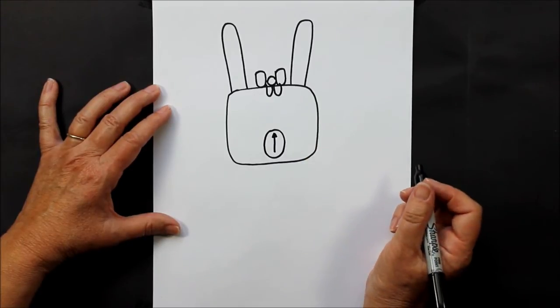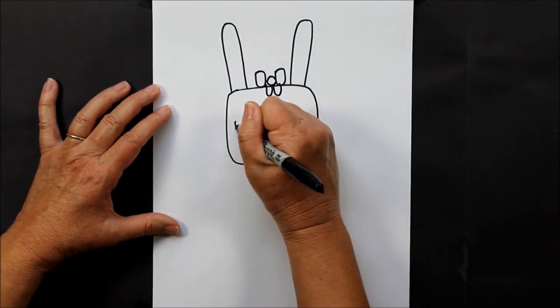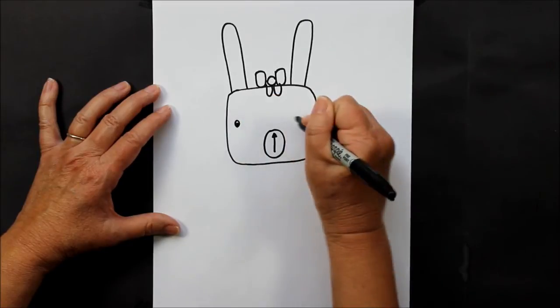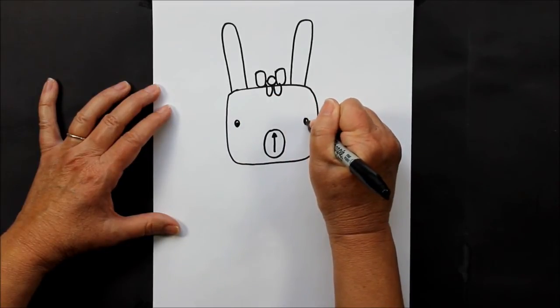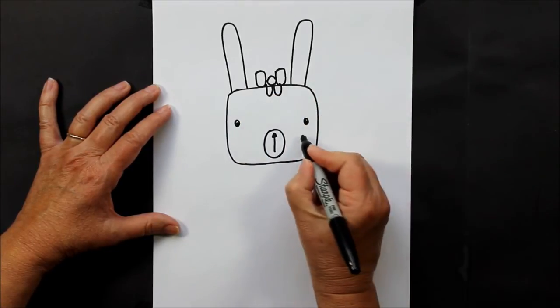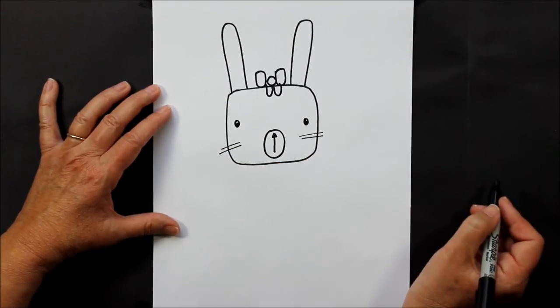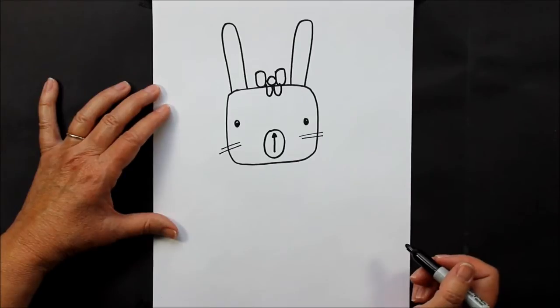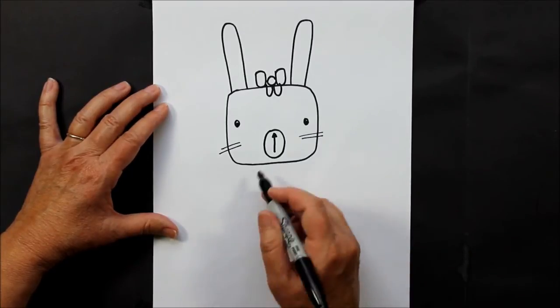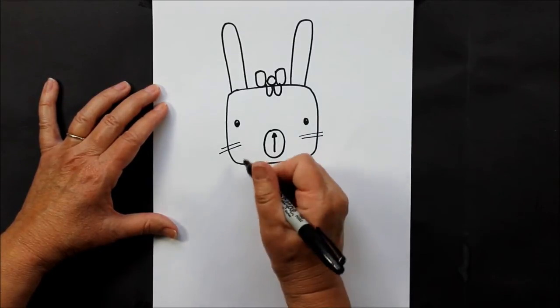Now let's start making her body. So we are going to make her in a little dress. We are going to start right underneath her head and make a little dress that looks like that.